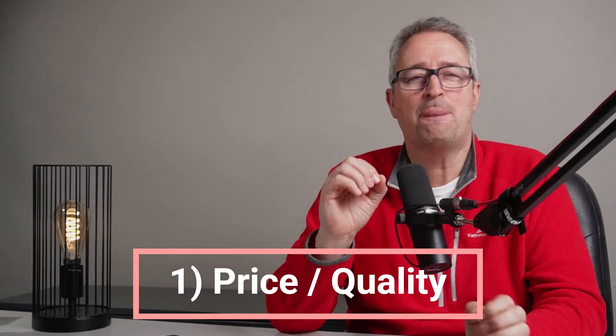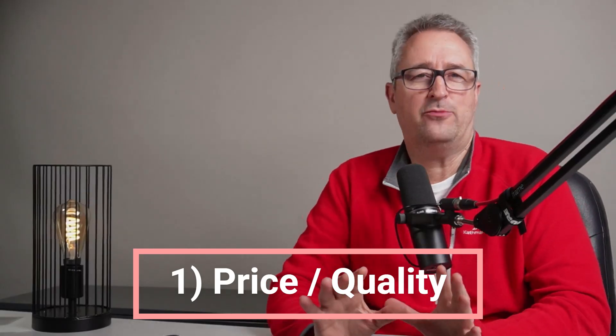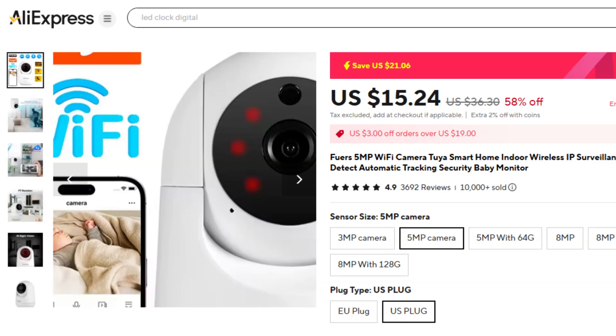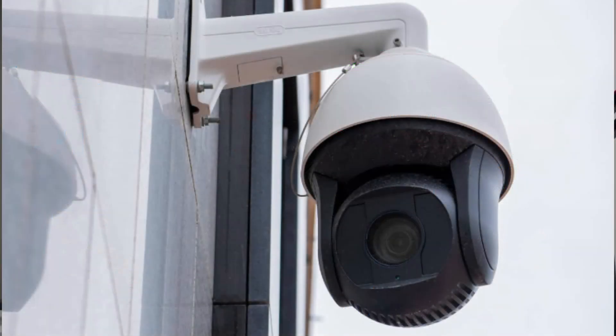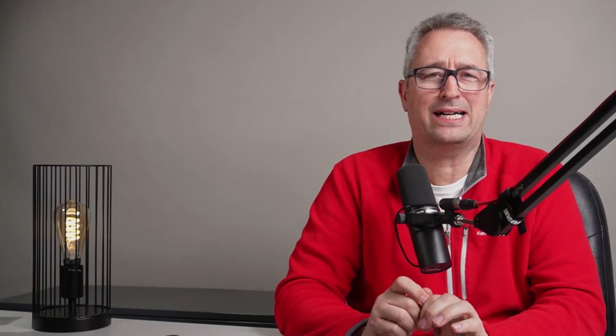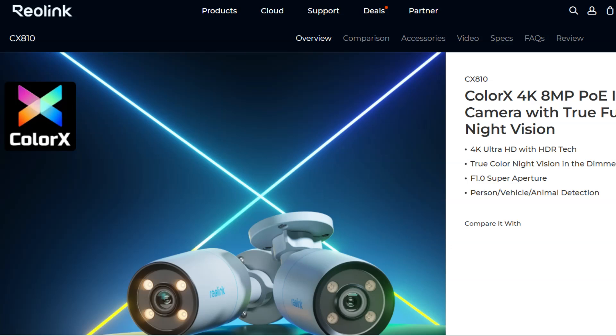Number one on my list is price versus quality. There are all sorts of cameras out there on the marketplace now from really cheap stuff on Amazon and AliExpress right through to professional quality products that could cost you thousands of dollars. Today I'm going to focus on the Reolink brand because I think this brand sits somewhere in the middle of these two options, offering good quality at an affordable price so that you can get the best of both worlds.